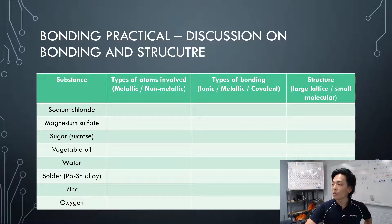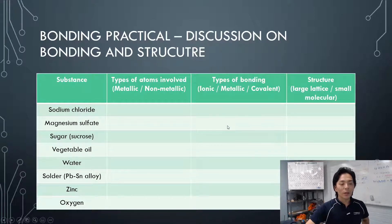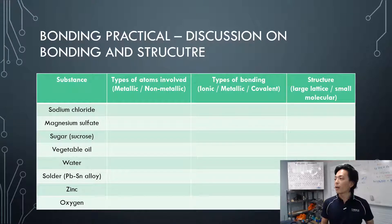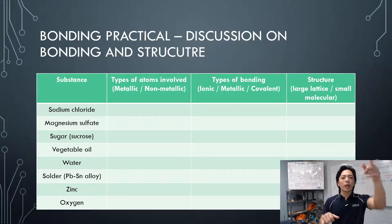Sugar — sucrose. The types of atoms involved are C, H, and O only. Therefore, non-metals only. The type of bonding should be covalent, because it's non-metal only. Structure-wise, it's actually molecules. Sugar is molecules. The molecules pull each other because of parts which are fairly electronegative, and they can pull each other.